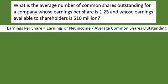You see the formula right below the question. Earnings per share is equal to earnings, or net income — both mean the same thing — divided by average common shares outstanding. Sometimes we just see this as common shares outstanding, not average. And given the information, we can solve this one.